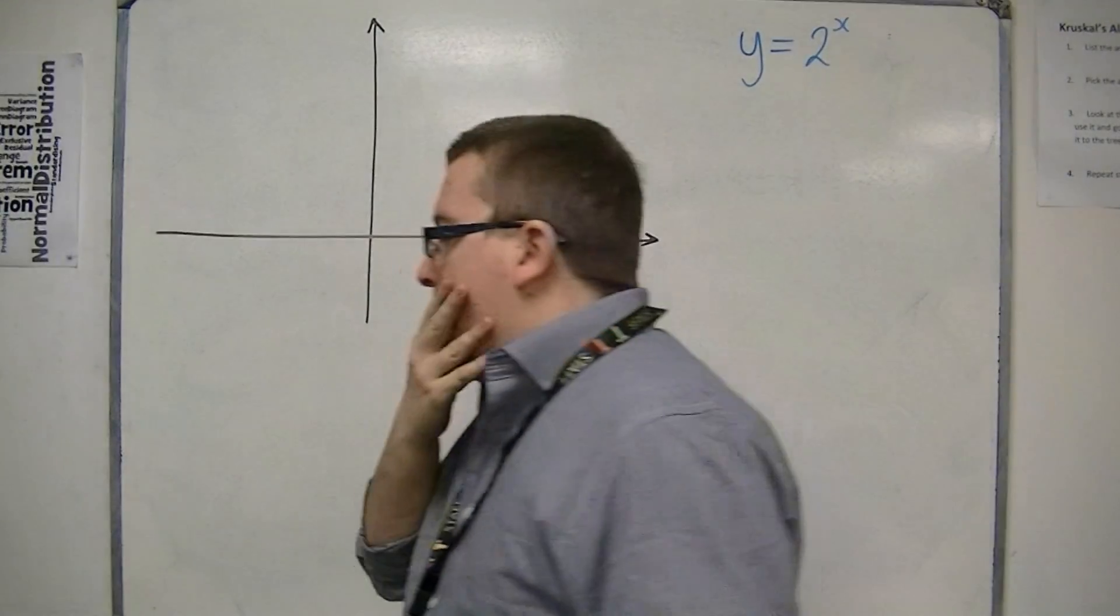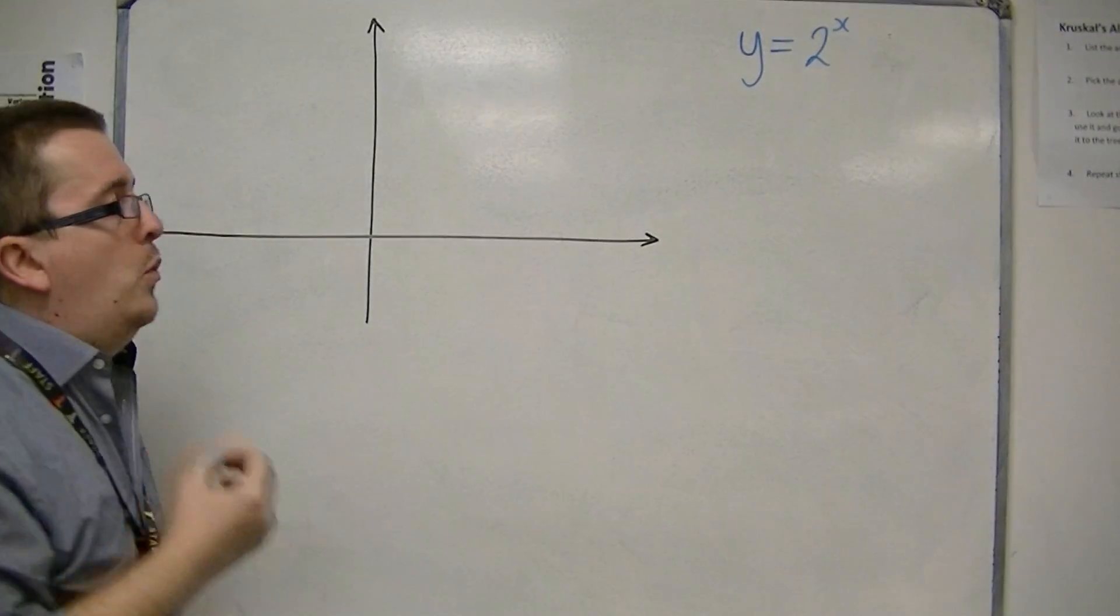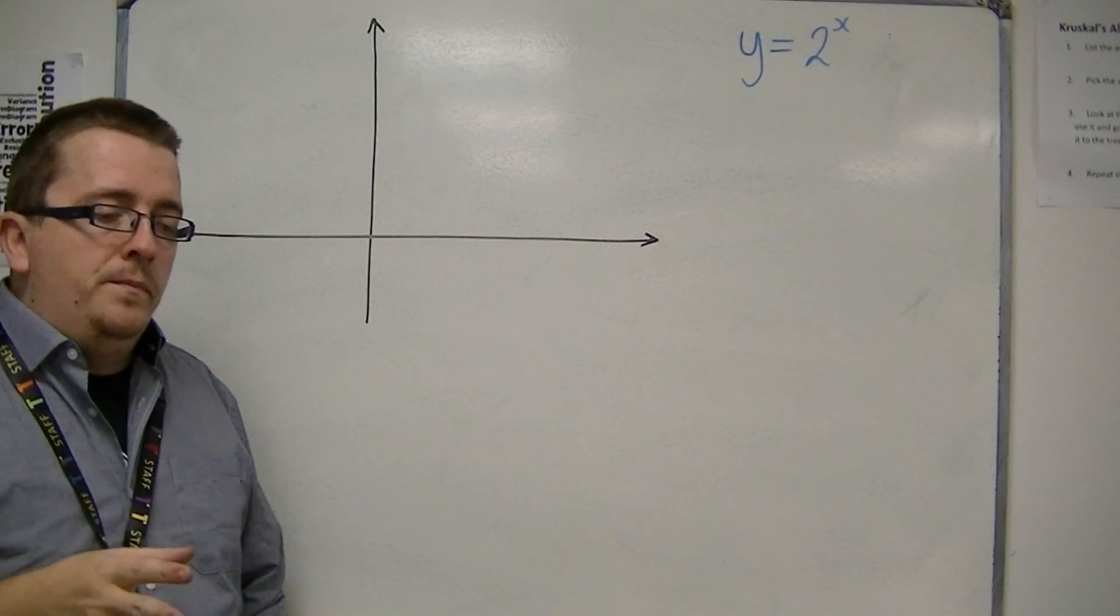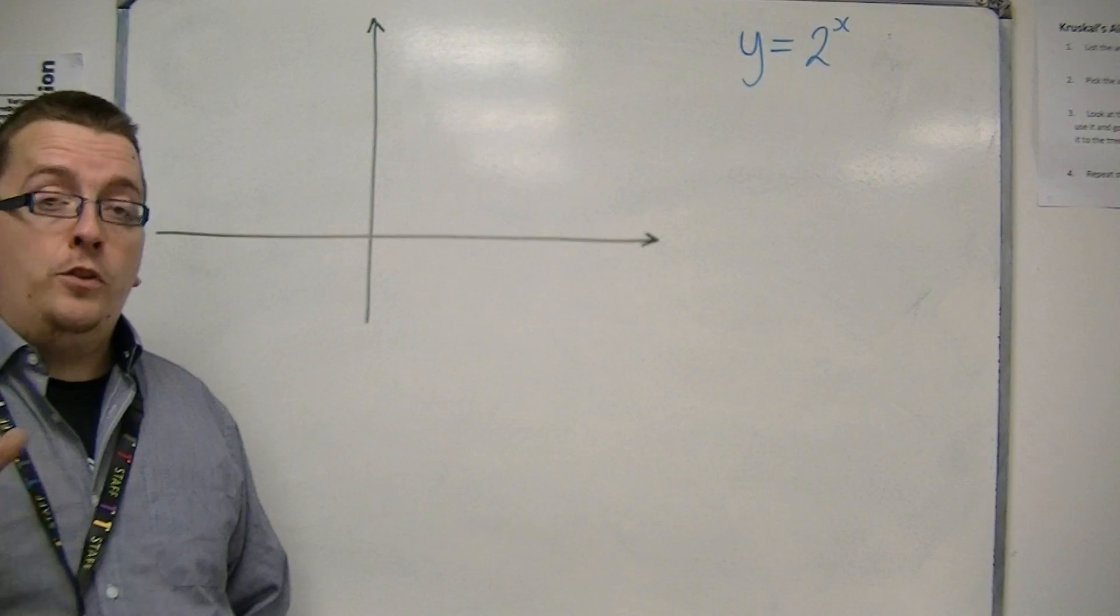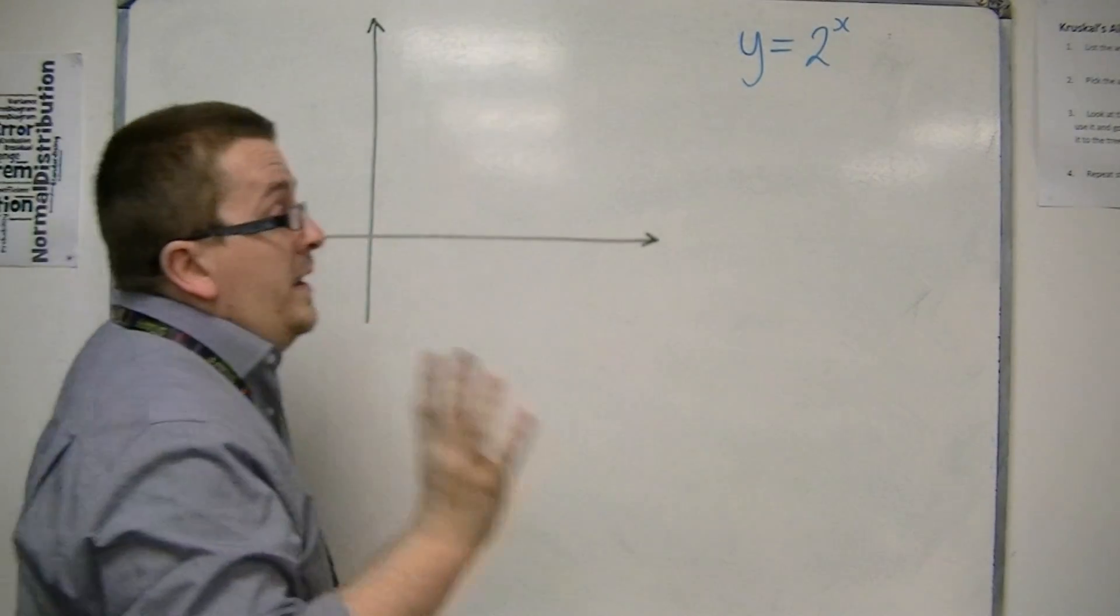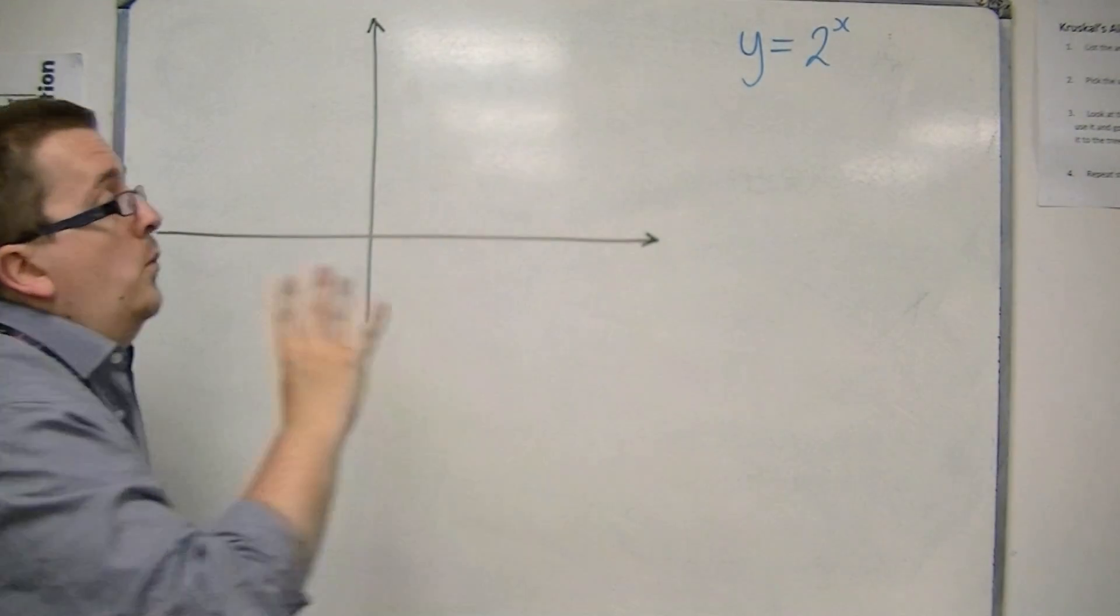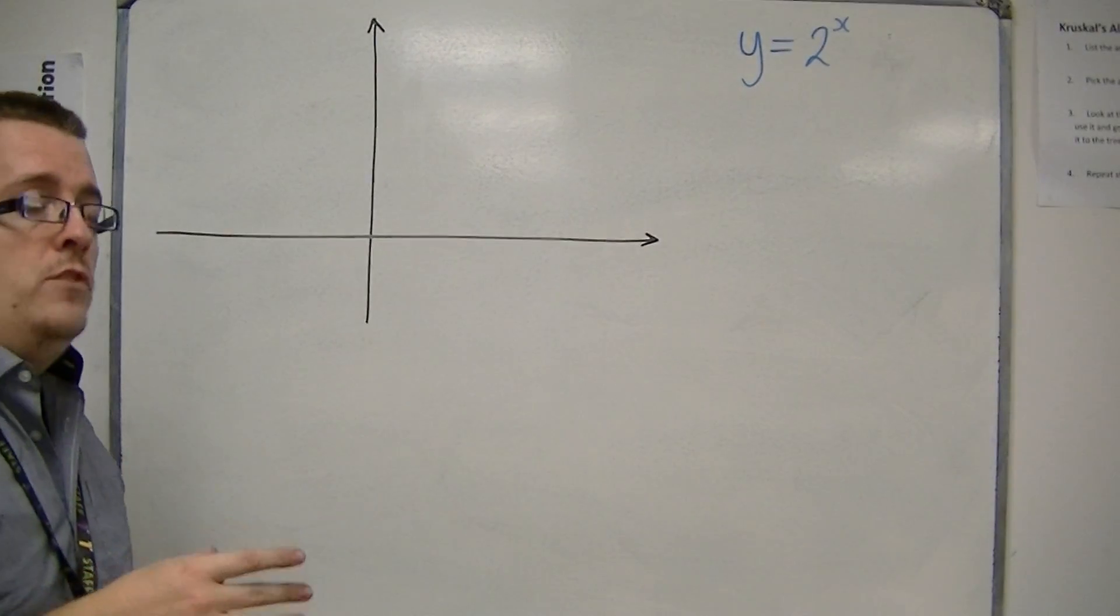Now if I'm going to sketch this, there's important considerations. First of all, we've got to think about where it crosses the x and y axis, if at all. So in order to do that, we think about where x is 0 and where y is 0.